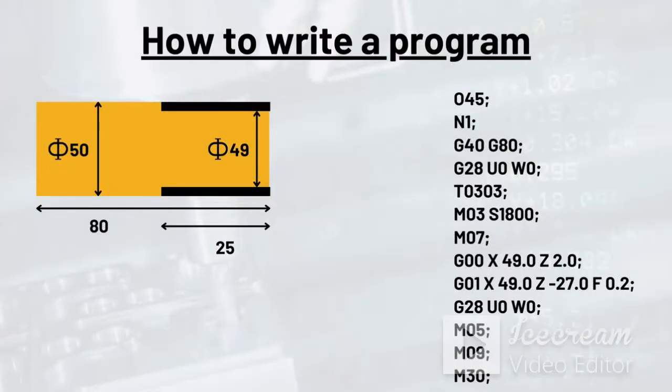In this lecture we will learn about the simplest and precise way of writing a CNC program. The very first step in writing a program is the program number, which generally starts with letter O. Let's say we have to write the 45th number of program, then we will write O45. This program number can go up to four digits, that is from 0 to 9999.